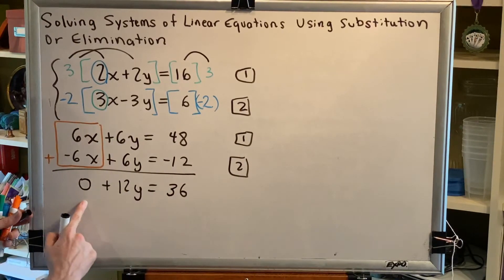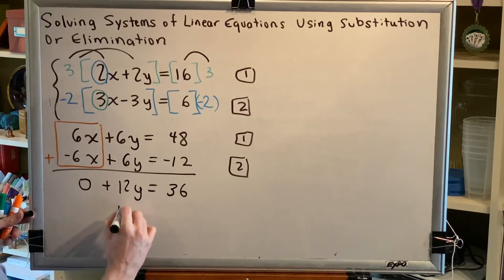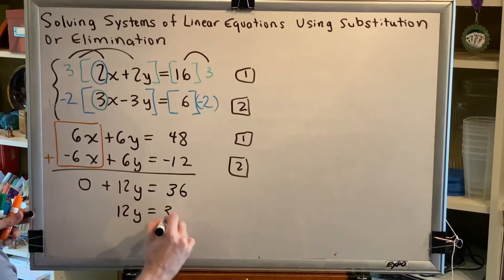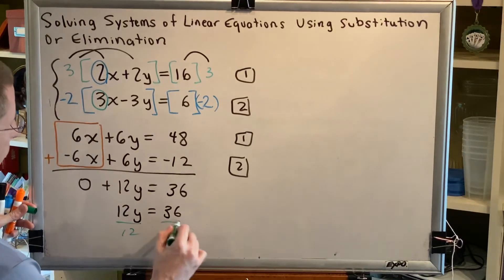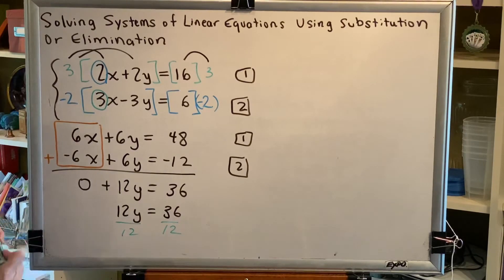Now anything plus 0 is itself, so this 12y plus 0 is simply 12y. And we get 12y equals 36. Notice that we no longer have an x in our equation. This allows us to divide by 12 on both sides and solve for y. And we get the result y equals 3.